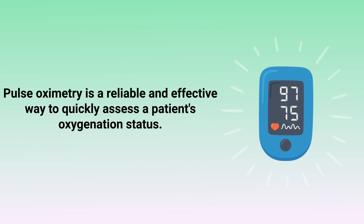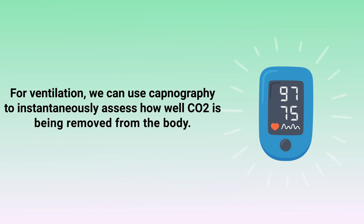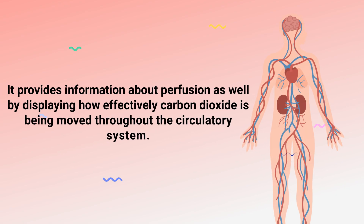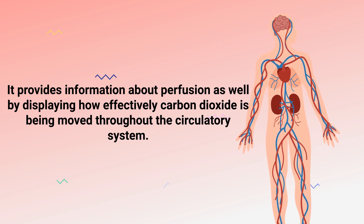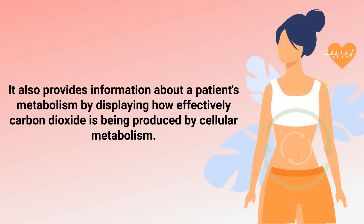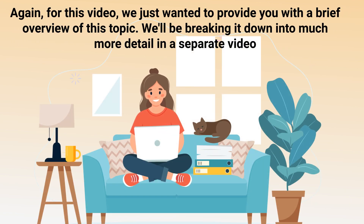Pulse oximetry is a reliable and effective way to quickly assess a patient's oxygenation status. For ventilation, we can use capnography to instantaneously assess how well CO2 is being removed from the body. It also provides information about perfusion by displaying how effectively carbon dioxide is being moved throughout the circulatory system, as well as information about a patient's metabolism by displaying how effectively carbon dioxide is being produced by cellular metabolism.